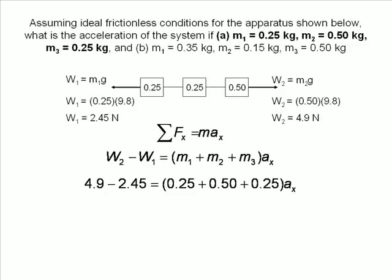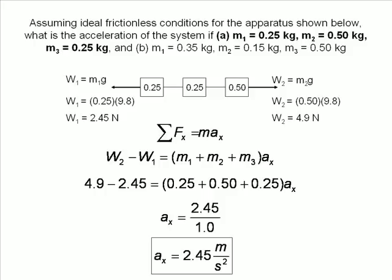We input our values, sum them, and divide both sides by the total mass to find our acceleration. The acceleration is 2.45 meters per second squared.